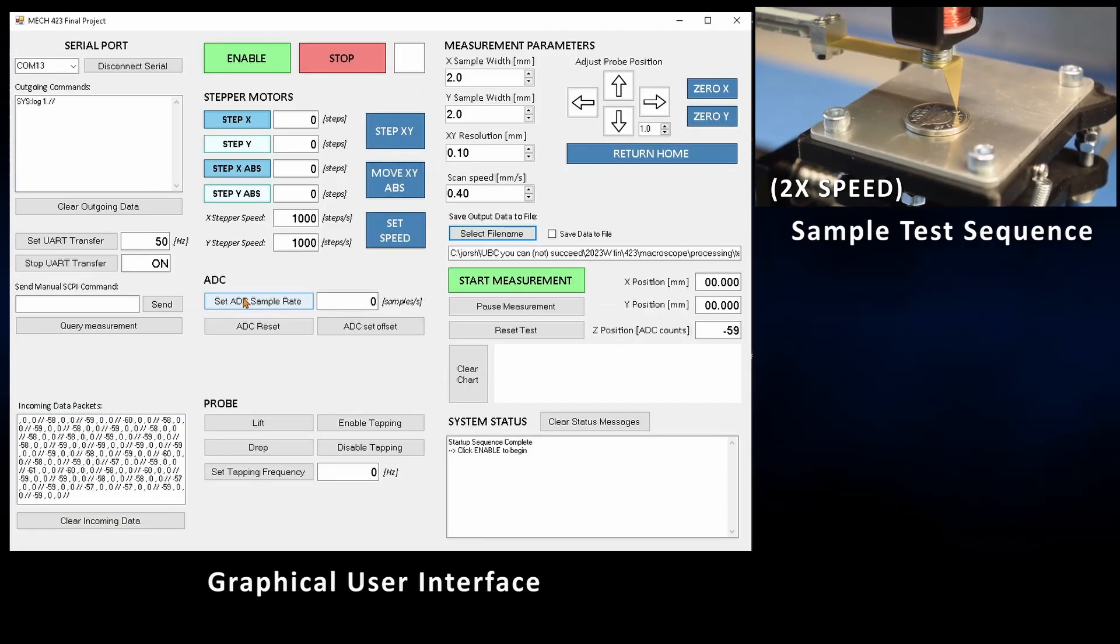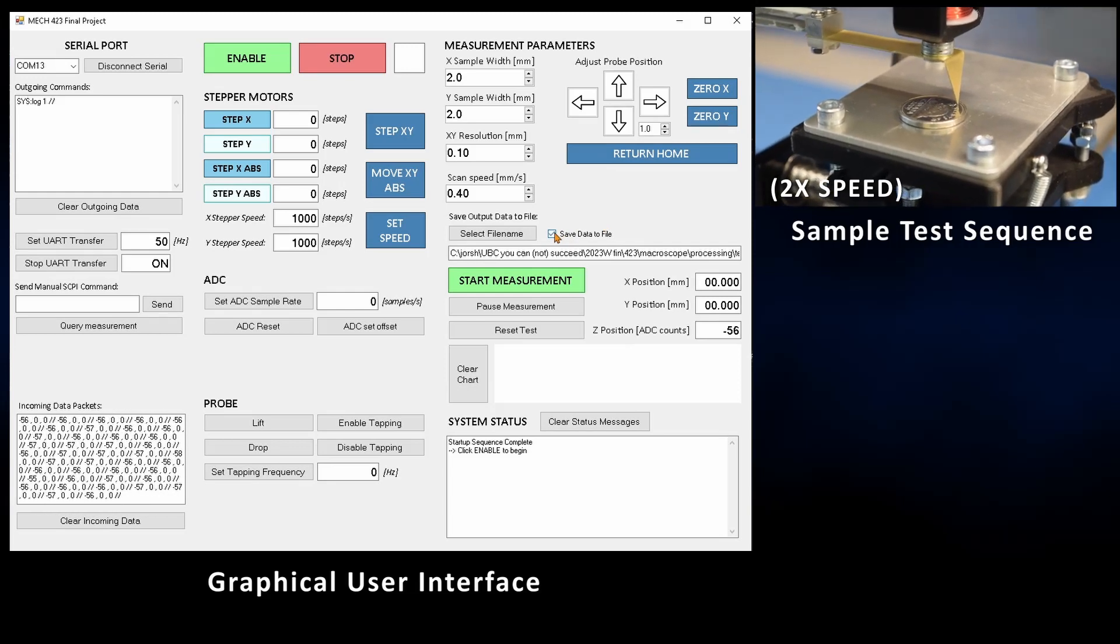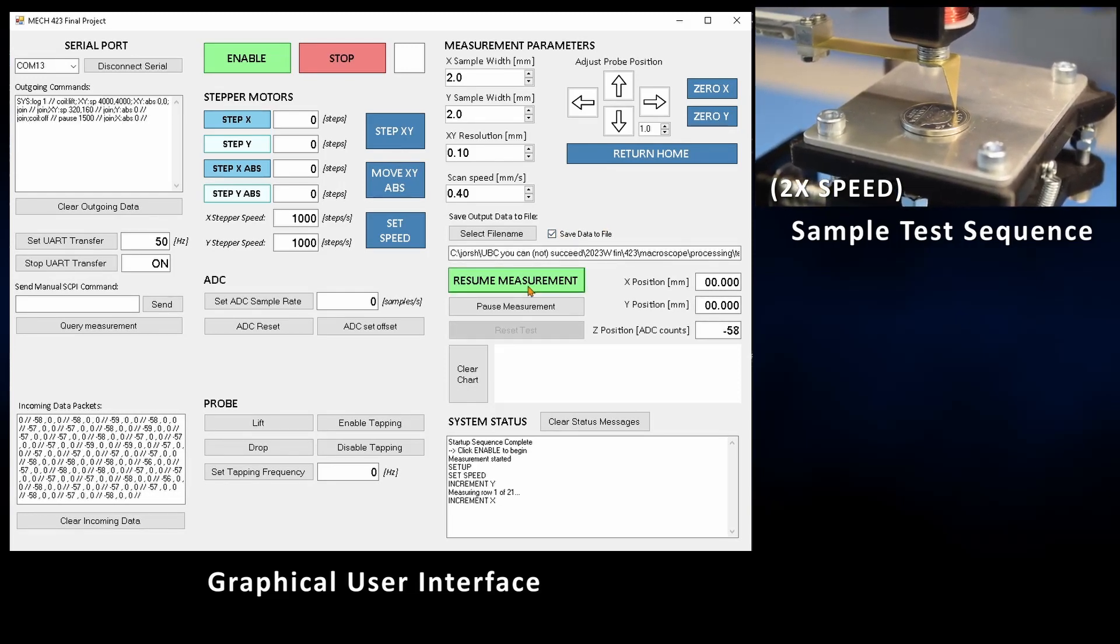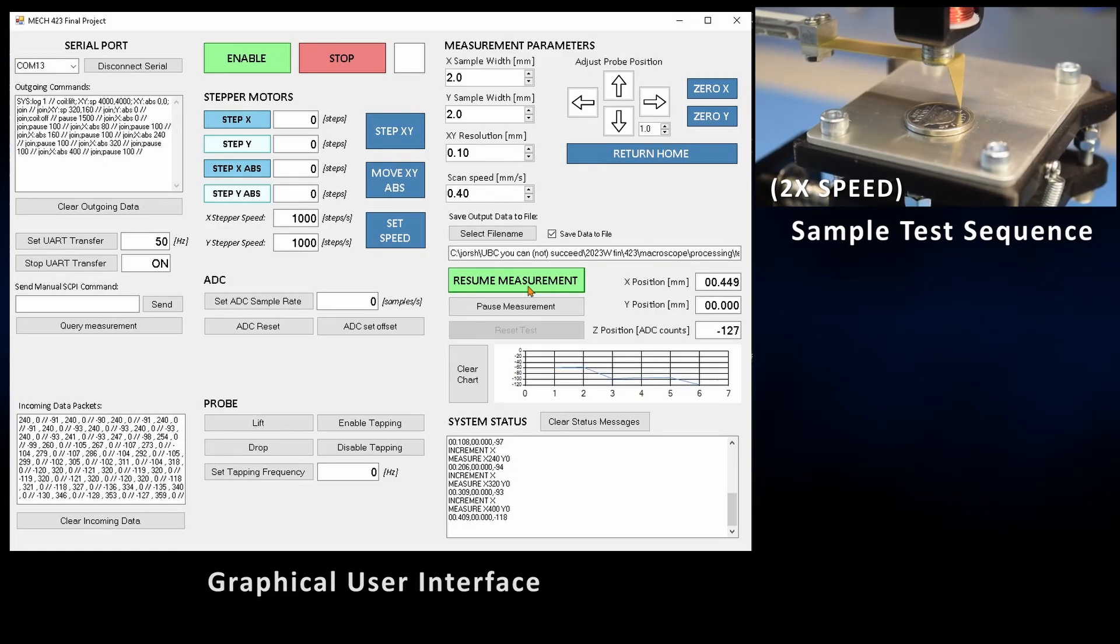A WinForms GUI allows the user to monitor incoming and outgoing data, manually test subsystems of the machine, configure scan parameters such as sample size and resolution, and run the automated scanning sequence.